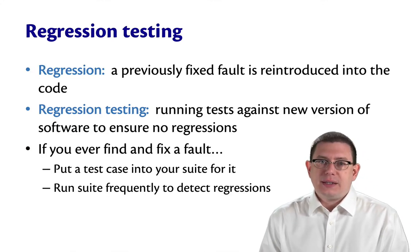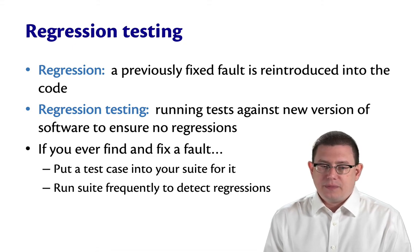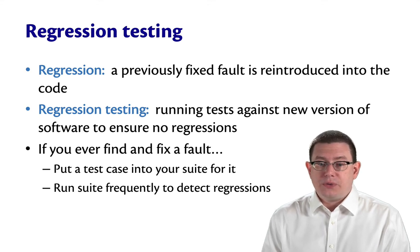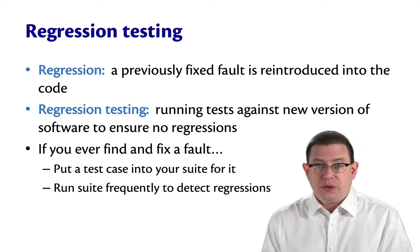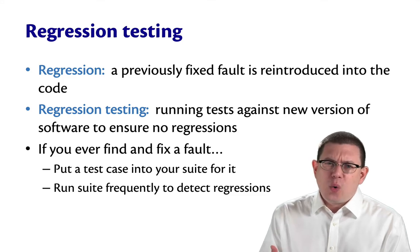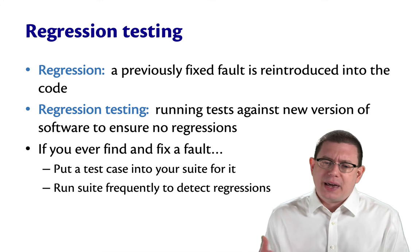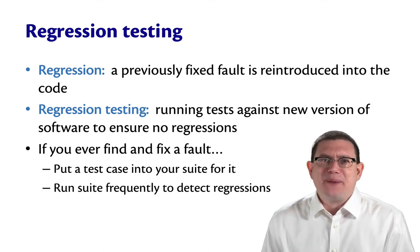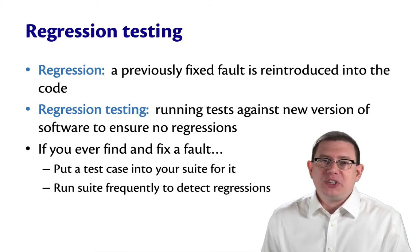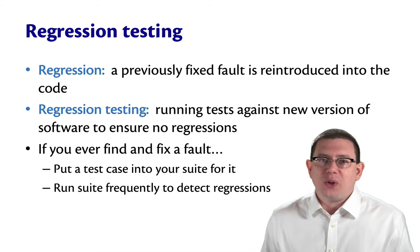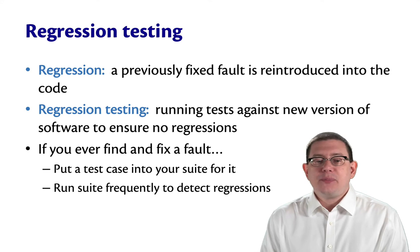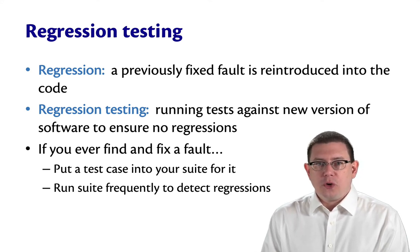Regression testing is another important component of testing. A regression here means that a previously fixed fault is somehow reintroduced into the code. To put it another way, you fixed a bug one day and then somehow the next day that bug is back because it got reintroduced into the code base. Maybe that's because you messed up a git merge, or maybe it's because some other programmer didn't realize that the fix had been made and stomped all over it.